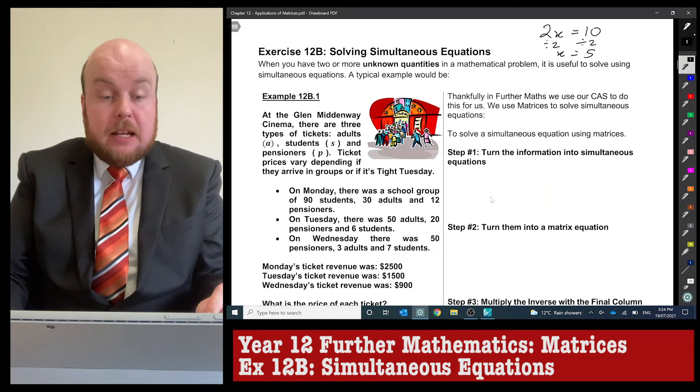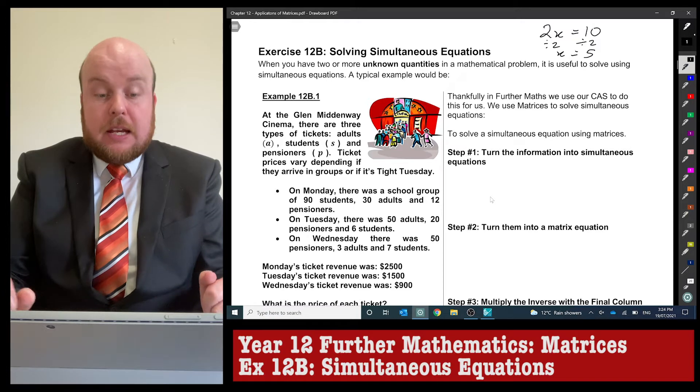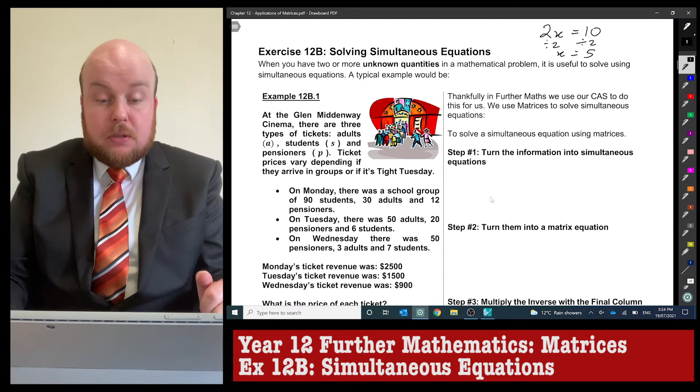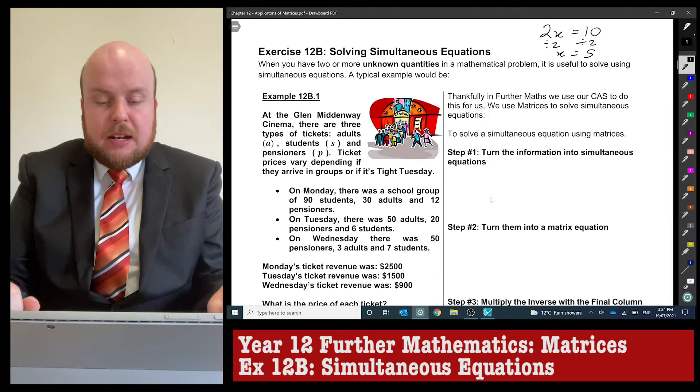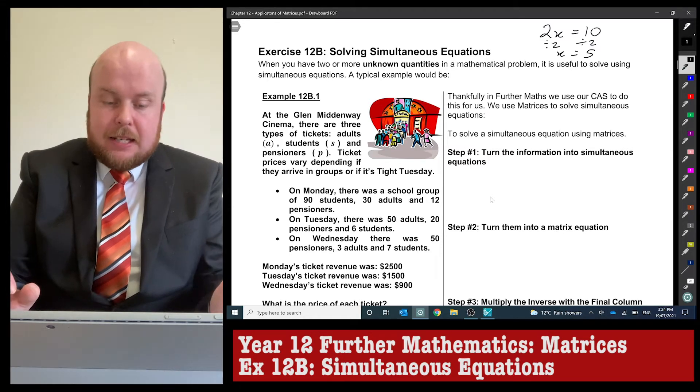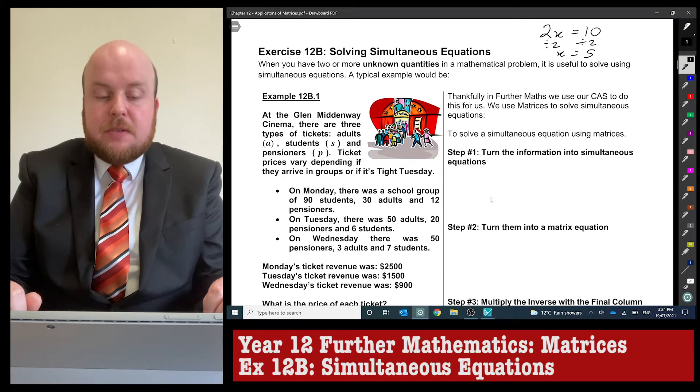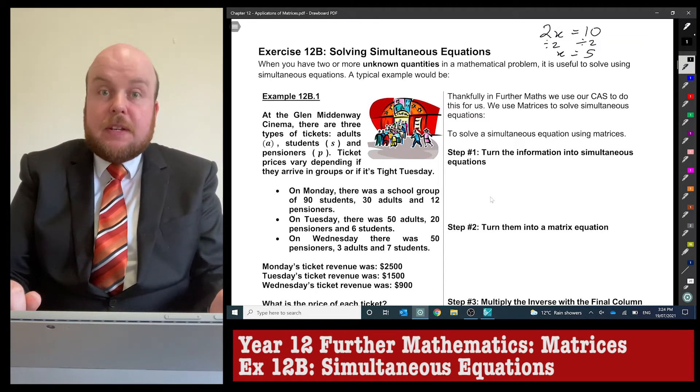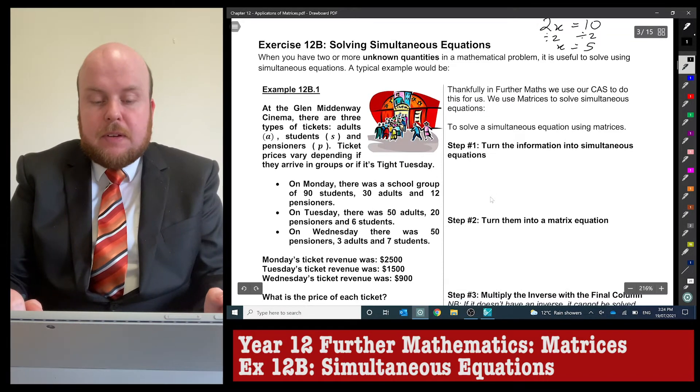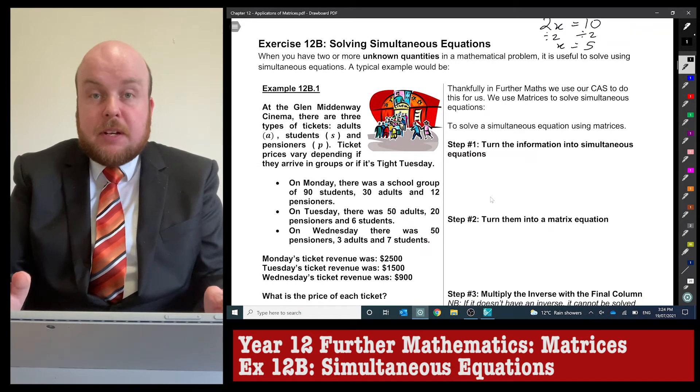On Monday there was a school group of 90 students, 30 adults, and 12 pensioners. On Tuesday there was 50 adults, 20 pensioners, and 6 students. On Wednesday there was 50 pensioners, 3 adults, and 7 students. Monday's ticket revenue was $2,500, Tuesday's was $1,500, and Wednesday's was $1,900. What is the price for each ticket?